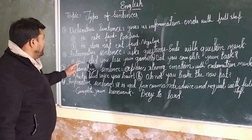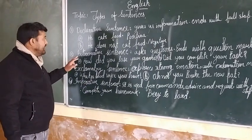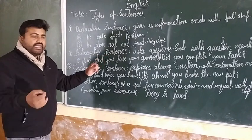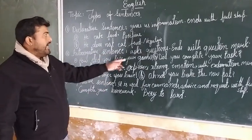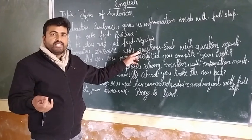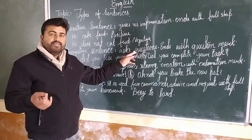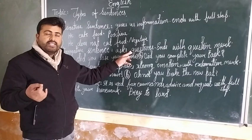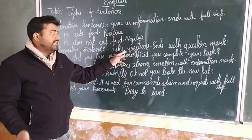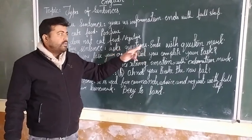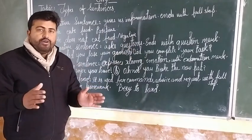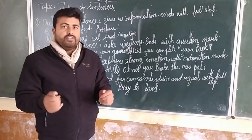The second type of sentence is the interrogative sentence. Interrogative sentence is very easy — it means asking questions. Whenever you want to ask questions, you must frame your ideas in an interrogative sentence, and you must use a question mark at the end of the sentence.